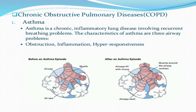The most common chronic obstructive respiratory disorder is asthma — a chronic inflammatory lung disease involving recurrent breathing problems. The characteristics of asthma involve three airway problems: obstruction, inflammation, and hypersensitivity, where the immune system overreacts on exposure to dust molecules. During asthma, airway walls are filled with mucus, muscles around the airways contract, and the airways become swollen.